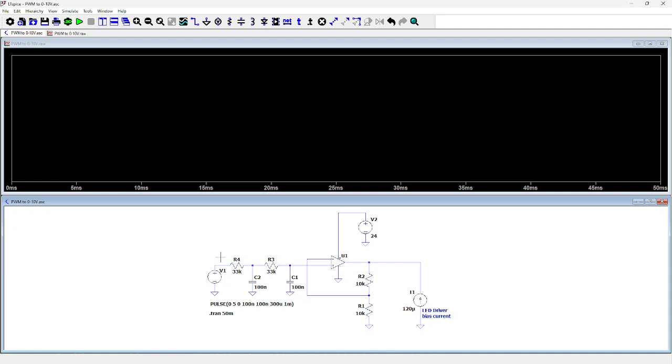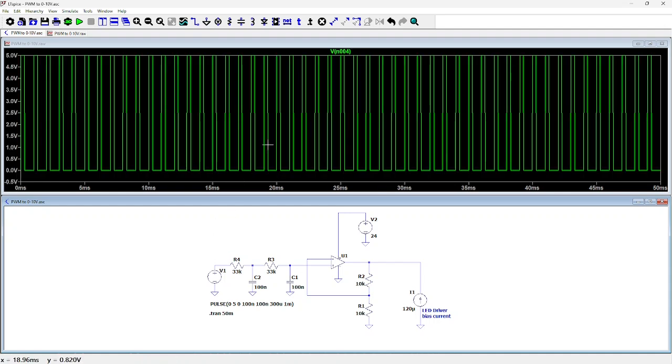Now let's have a look at the PWM voltage. Here you see the PWM voltage. It's 300 microseconds on, a period of 1 millisecond. So this is a 30% PWM signal.